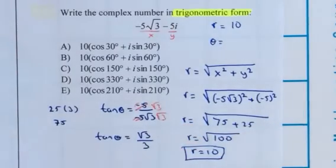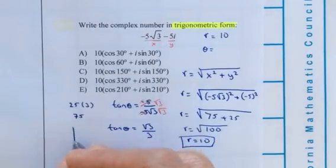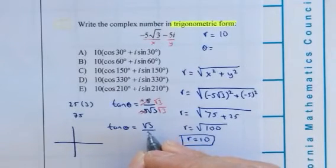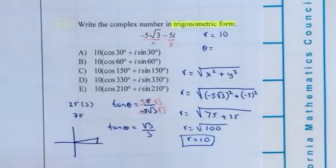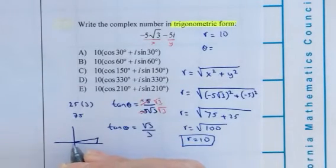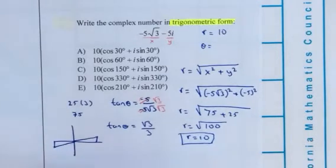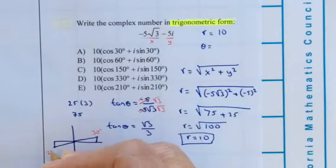So therefore, I'm looking for an angle where the tangent is square root of 3 over 3. So we know that's going to be 30 degrees. The tangent of 30 degrees is square root of 3 over 3, positive. And the other positive tangent angle is in quadrant 3. So therefore, it will be 30 degrees or 210 degrees.